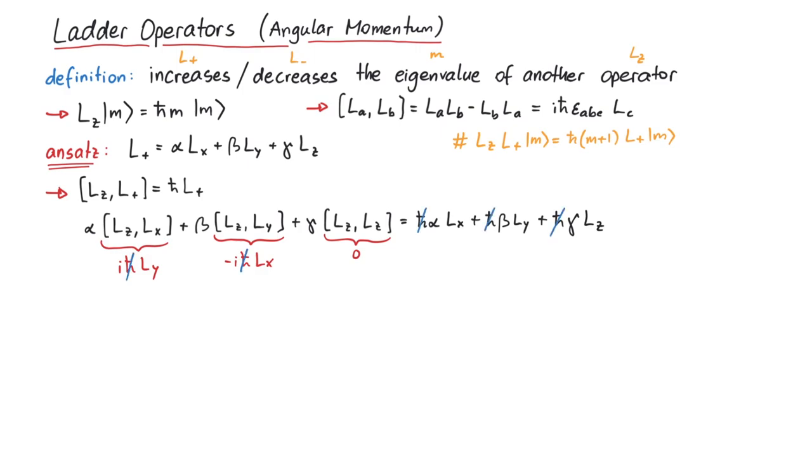We can now investigate the coefficients of each component of the angular momentum using this simple equation. For l x, we find that minus i beta is equal to alpha. For l y, we have i alpha equal to beta. And for l z, we get zero equal to gamma.